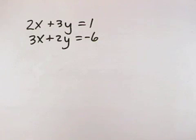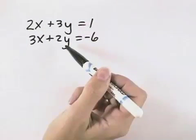We want to solve the system of equations using the addition method. That means we want to either eliminate our x's or our y's by getting opposite coefficients in front.